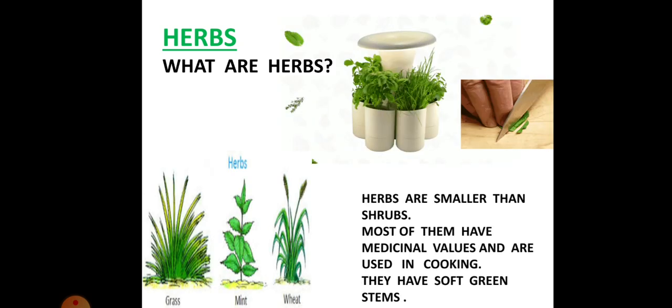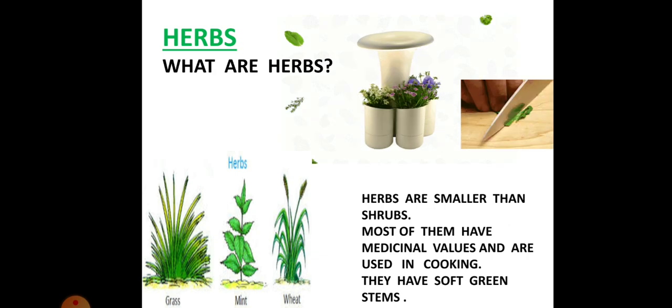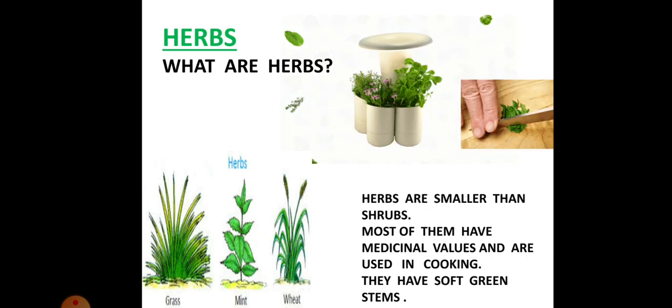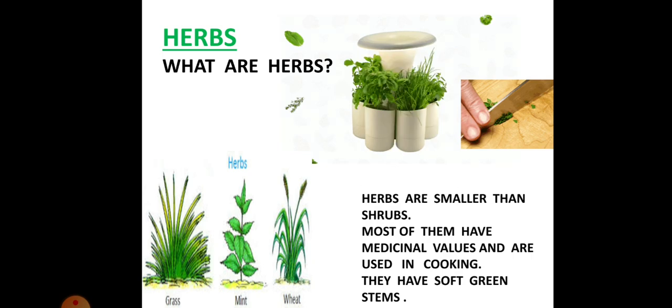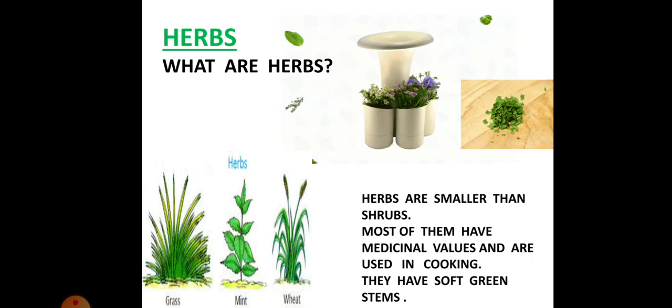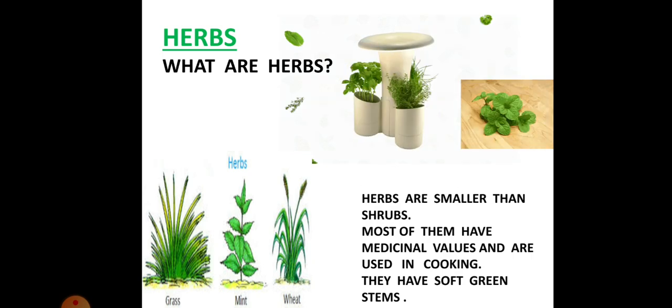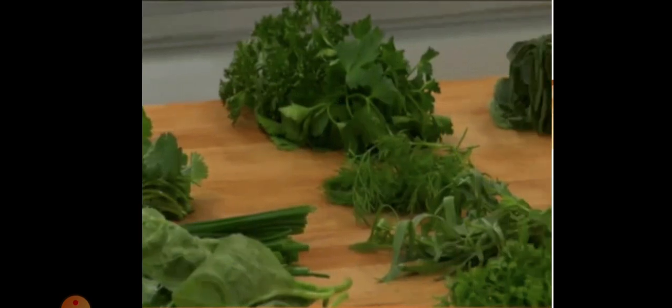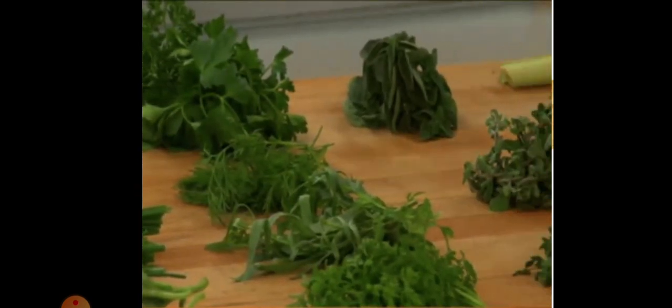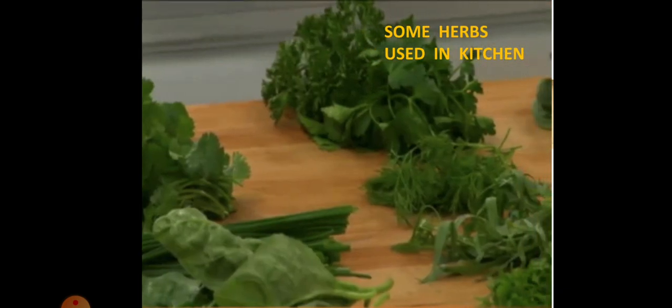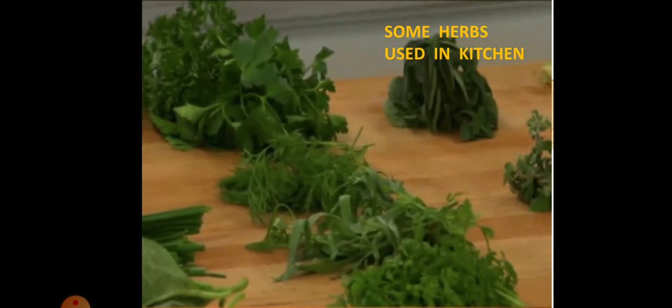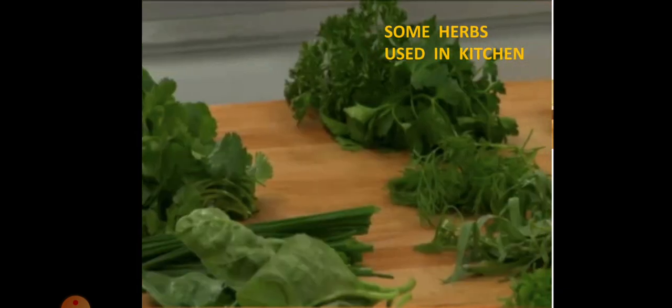Moving to the next type are the herbs. Now what are herbs? Herbs are smaller than shrubs. Most of them have medicinal values and are used in cooking. They have soft green stems. Let us see some of the herbs. These are the herbs which are used in our kitchen. A variety of them.